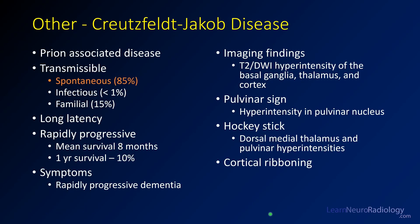CJD is another unusual infection — it's a prion-associated disease. Notably, 85% of cases are spontaneous, occurring in patients without a familial history and without exposure to infectious agents such as contaminated beef. Less than one percent are infectious, though that's what gets the most attention. About 15% have a familial history of prion disease. There is a very long latency — even if exposed, it can take 10 to 15 years to develop — but once it develops, mean survival is less than a year. Symptoms include rapidly progressive dementia and sometimes movement disorders.